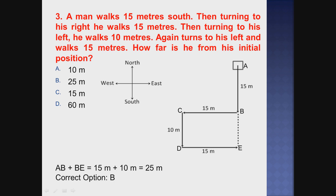Question number 3. A man walks 15 meters south, then turning to his right he walks 15 meters, then turning to his left he walks 10 meters, and again turning to his left he walks 15 meters. How far is he from his initial position? This is the same model as question 1.